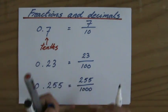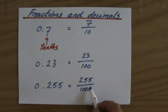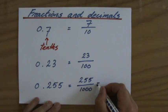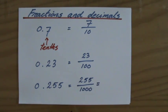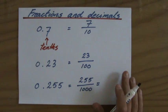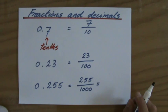But now that last one I can simplify. I see a common factor because of five and a zero, so I see a common factor of five. 255 divided by five, that would be 51, and a thousand divided by five is 200.